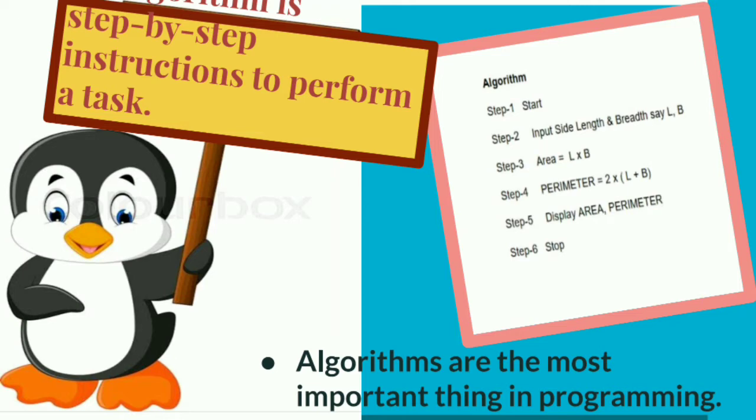See the example here. Start and we have to get the length and breadth of the rectangle. If we multiply that, we will get the area. If we add and multiply with 2, we will get the perimeter. So this is the algorithm to find area and perimeter of a rectangle.